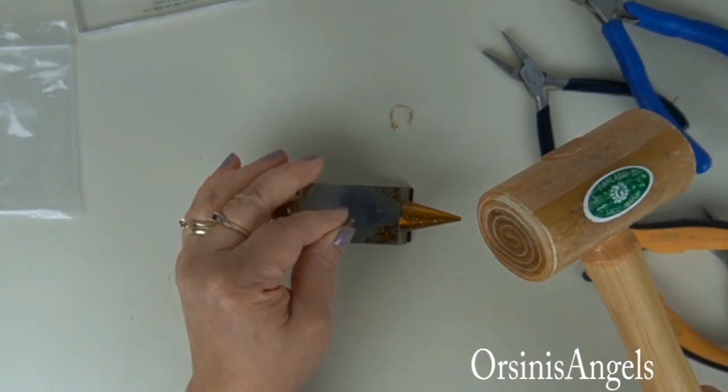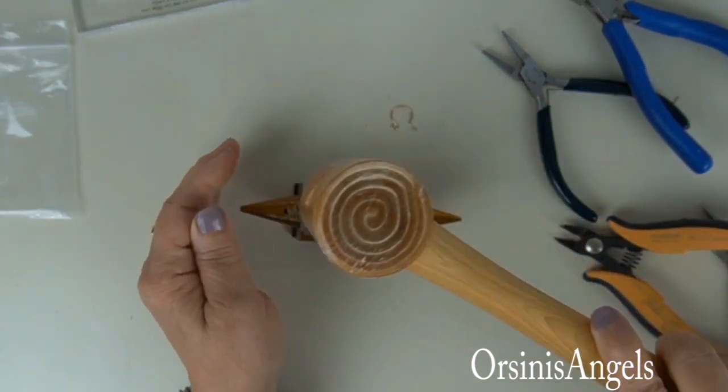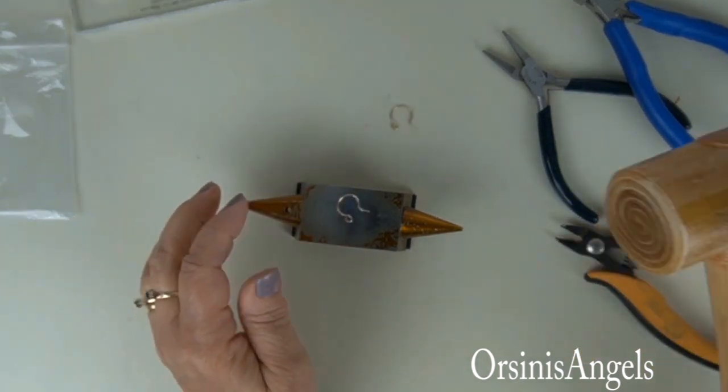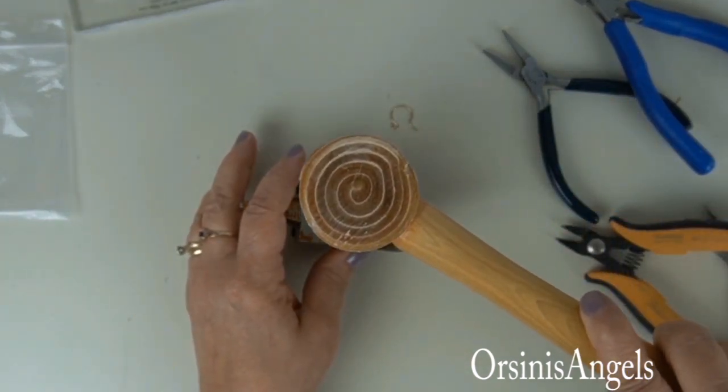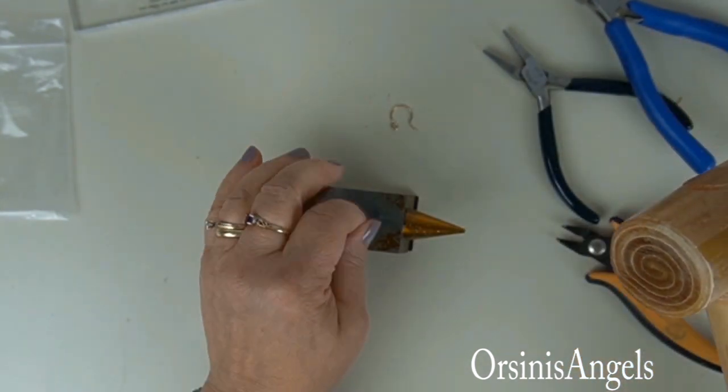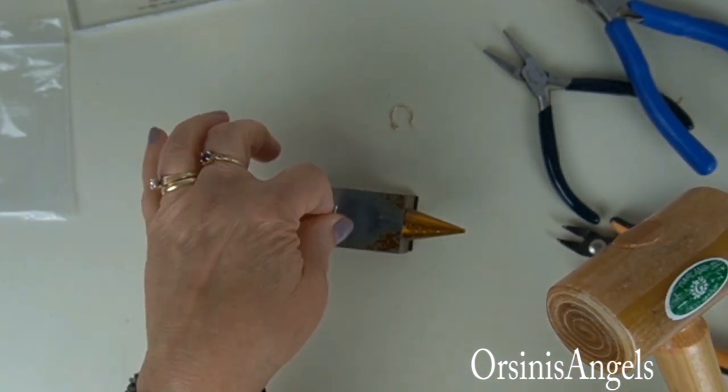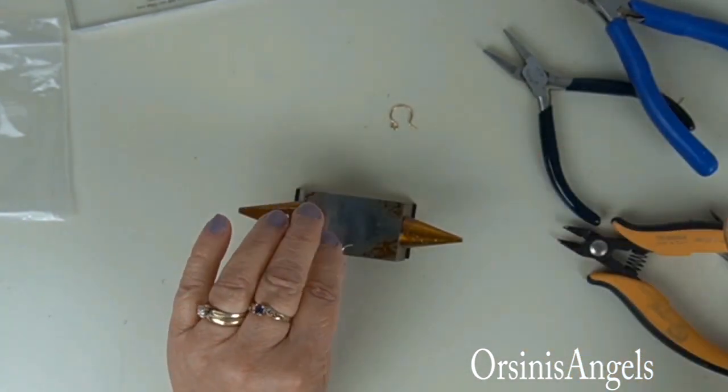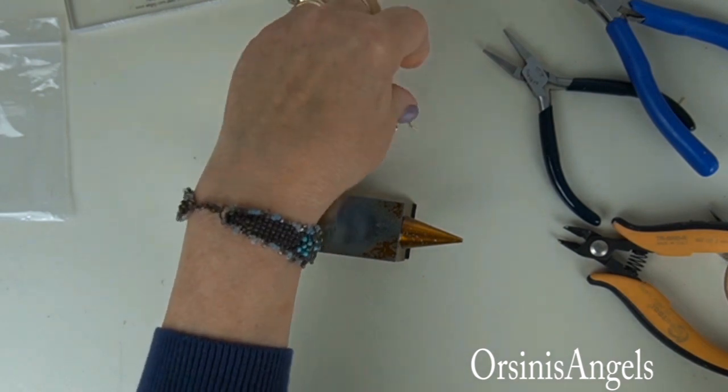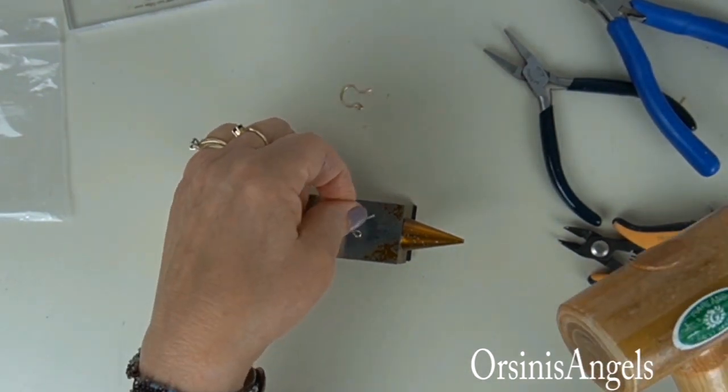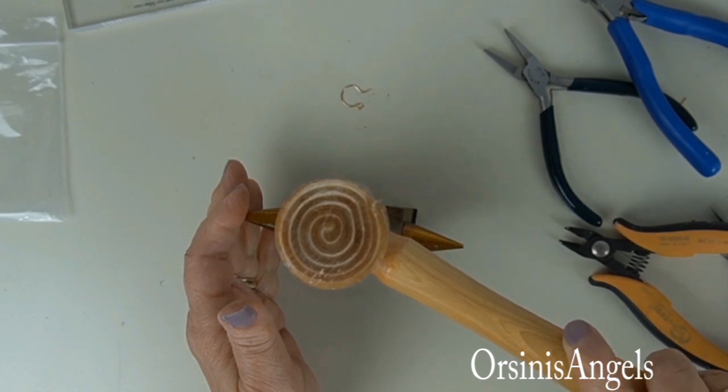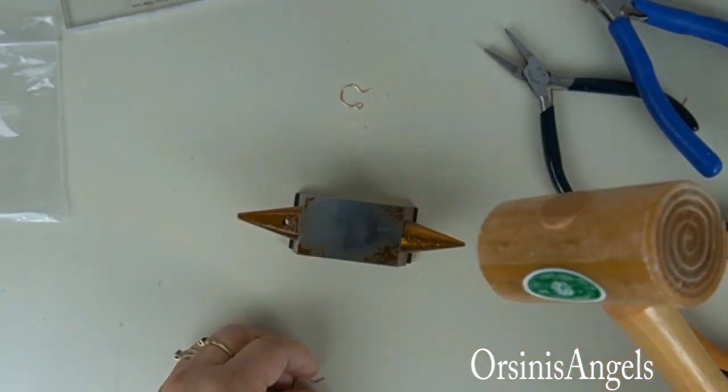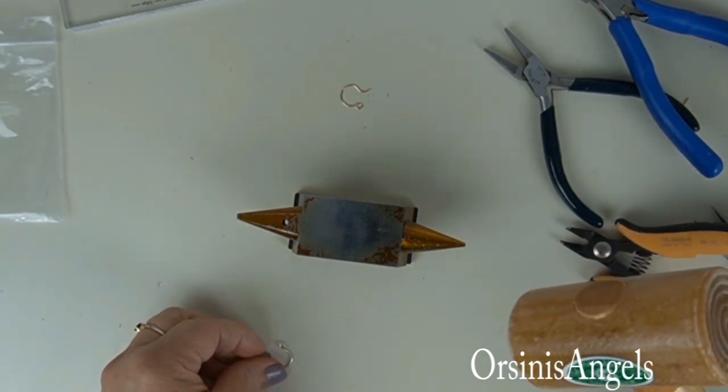There's kind of a fine balance. You don't want to harden it to the point where it's brittle and breaks, but you don't want to leave it so soft that it doesn't hold its shape. That's why I tend to like the half hard wire better. I don't know why I got the soft, but anyway that's what I had so that's what I'm using.